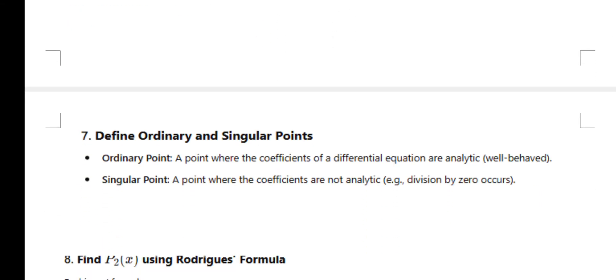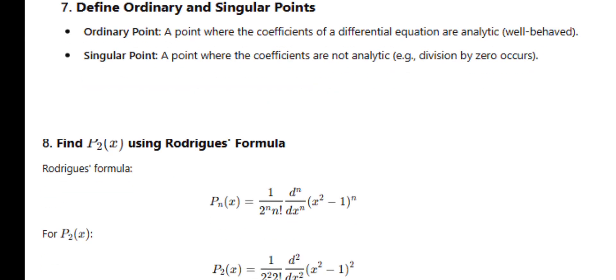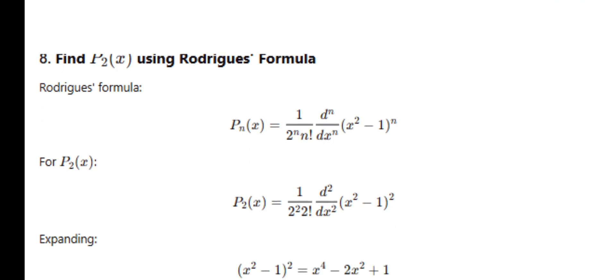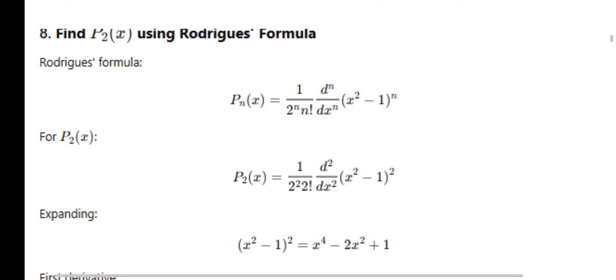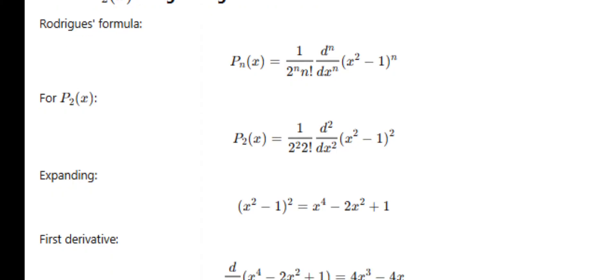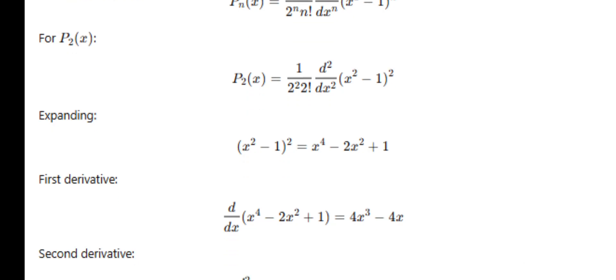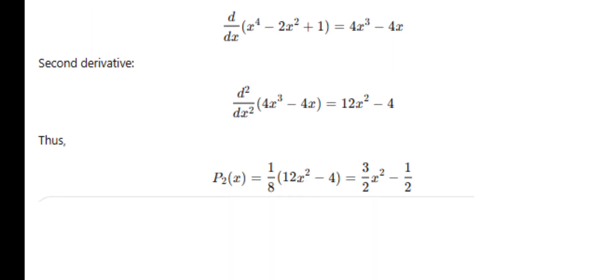Define ordinary and singular points: a point where the coefficients of a differential equation are analytic is called an ordinary point; a point where the coefficients are not analytic is called a singular point. Next: find P₂(x) using Rodrigues' formula. Pₙ(x) = (1 / 2ⁿ n!) · (dⁿ/dxⁿ)(x² - 1)ⁿ. Substituting n = 2 and differentiating twice: differentiate (x² - 1)² twice to get the result. With factor 1/(2² · 2!) = 1/8, we get P₂(x) = (1/2)(3x² - 1).